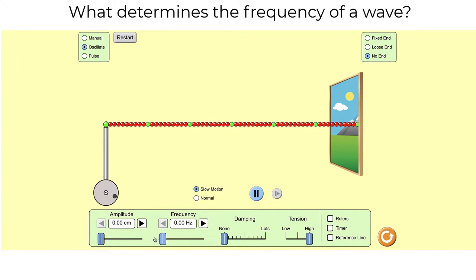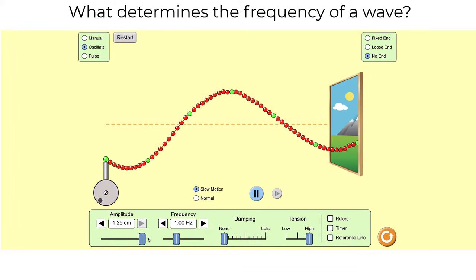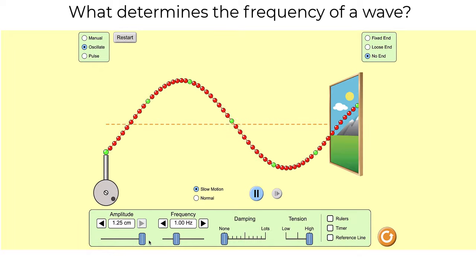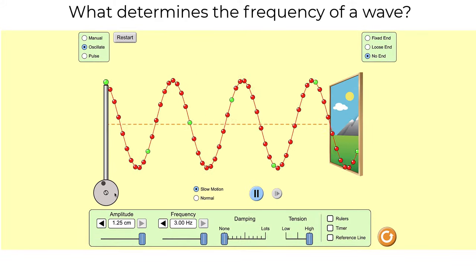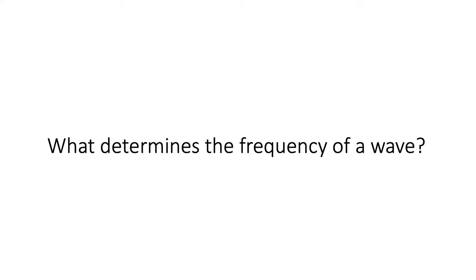In the simulation, we can adjust amplitude and frequency. Starting at one hertz — one cycle every second — we can see our waveform. Notice what is causing the wave: the oscillating device on the side. When we increase the frequency to three hertz, we want three cycles every second. Notice that the wave source is now moving faster, confirming that the source of the waves is what determines frequency.